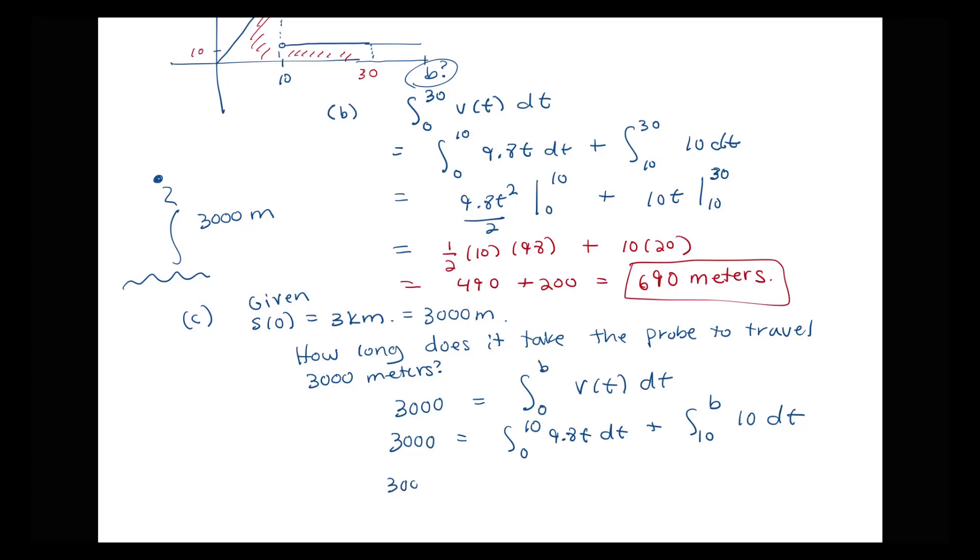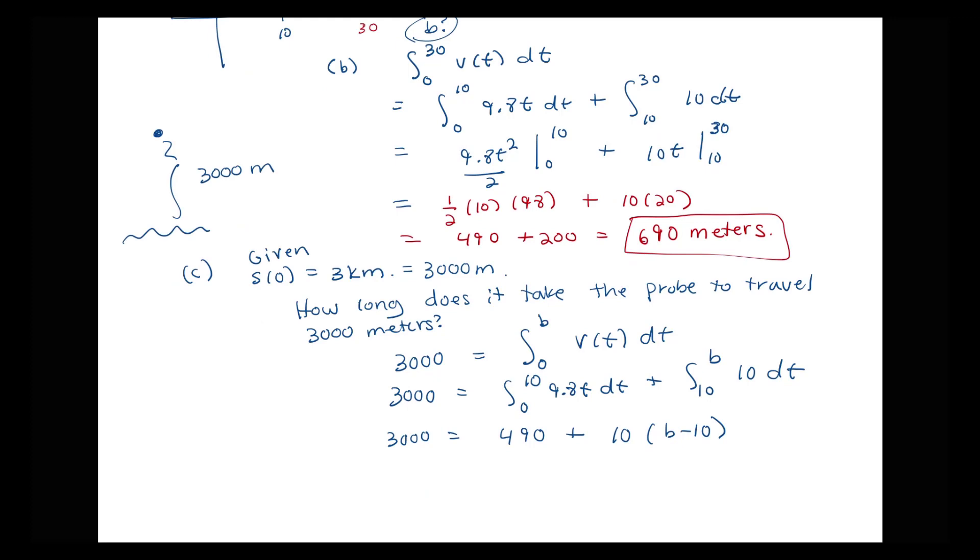So we have 3,000 here equals our integral from 0 to 10 of 9.8t dt, which we know from earlier is equal to 490 plus this integral from 10 to B of 10 dt, which will be 10 times B minus 10. So now subtracting 490 from both sides, we have 2,510 here is equal to 10 times B minus 10. Divide both sides by 10. We have 251 equals B minus 10 or B is equal to 261.